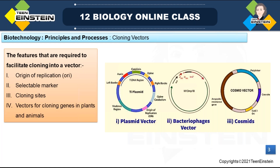In the last class, we learned about features required to do cloning into a vector. The features a vector should have are: origin of replication, selectable marker, cloning sites, and vectors for cloning genes in plants and animals. These are the features required to facilitate cloning into a vector, and for cloning in plants and animals, proper vectors should be available.